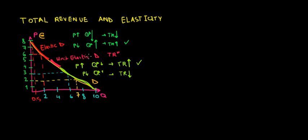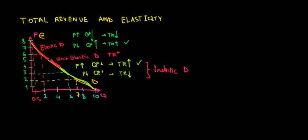To summarize: we have a region where we're very sensitive to price changes (elastic), a region where we have proportionate behavior (unit elastic), and a region where prices are low and reactions are insignificant (inelastic) — where we can still increase revenues by raising price. In the next video we'll go through a graph and after that we'll work with the math.